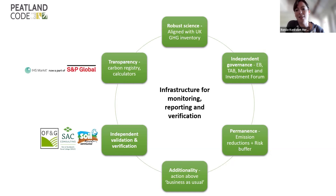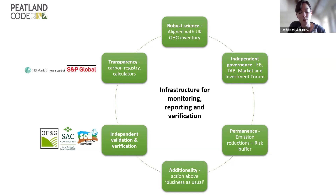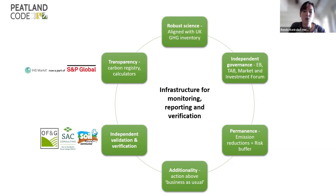Additionality is key in carbon markets — that means you have to make sure that your action is additional to business as usual, and we've got tests to check that that's the case. Then we've got independent validation and verification. We now have three validation and verification bodies: OFNG, SAC Consulting, and Silvar Association. And then the last one is transparency — we've got that UK Land Carbon Registry, which is a separate independent registry hosted by S&P Global, and all our calculators and data are publicly available.